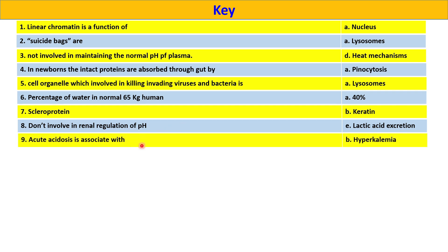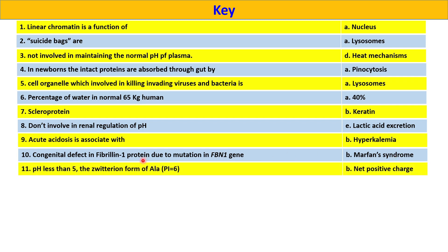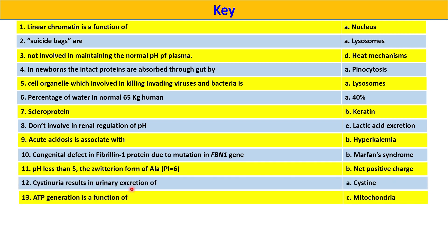Acute acidosis is associated with option B, hyperkalemia. Congenital defect in fibrillin 1 protein due to mutation in FBN1 gene is Marfan syndrome. pH less than 5, the zwitterion form of alanine at pI 6 is net positive charge. Cystinuria results in urine excretion of cysteine, option A. ATP generation is a function of option C, mitochondria. Which one of the following is associated with bacterial cells, option A, ribosomes?